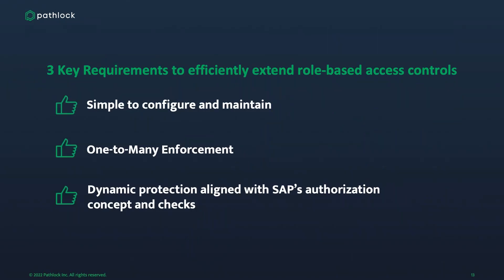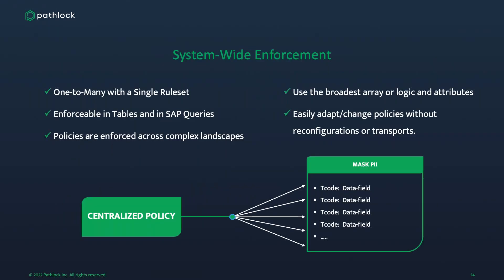Three key requirements to efficiently extend role-based access controls: it must be easy to maintain and configure; it needs one-to-many enforcement of policies; and it must provide dynamic protection. This is aligned with the existing authorization checks and builds together to give you an efficient system to protect SAP. System-wide enforcement works because it uses a centralized policy — one rule set enforceable across both tables and SAP queries — allowing you to enforce policies across a complex landscape.